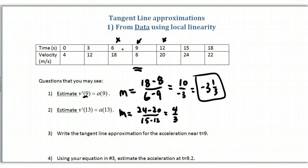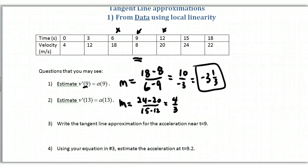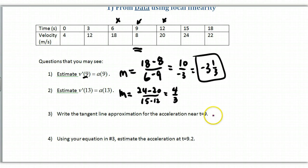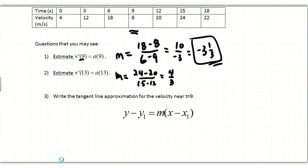Now we want to write the tangent line approximation for the acceleration near t equal to 9. I need a point and a slope. Where am I going to get a point from and where am I going to get the slope? The slope is in part number 1. If I plug it into my point slope form, I'm going to be in business. My point is 9, 8. And my slope is going to be negative 10 thirds because that's my point of interest and my slope in and around that area is negative 10 thirds.